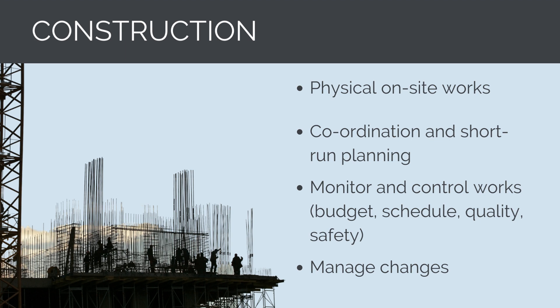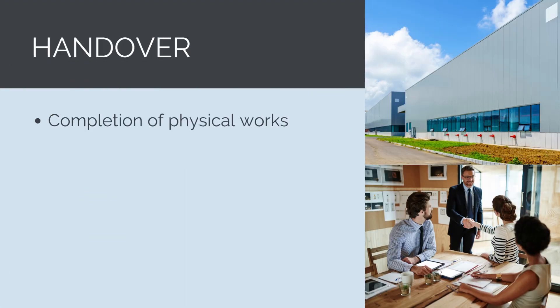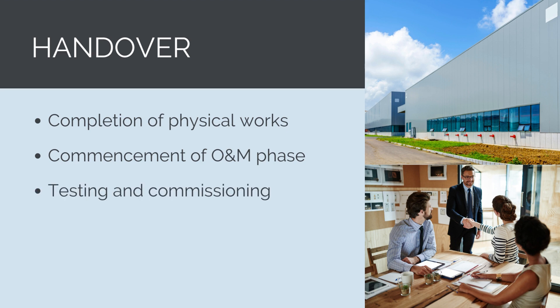Once physical works are completed and the building or asset has been constructed as per the issue-for-construction drawing set, the process of handing over the finished product back to the owner can begin. This leads to the commencement of the operations and maintenance phase. Construction contracts typically require the contractor to support the project owner in this transition — they'll need to complete a testing and commissioning process to ensure the infrastructure functions as intended, collate all the as-built drawings, and provide owner training. With the completion of this phase, the contractor has fulfilled their contractual obligations, unless they are procured under a design, construction, and maintain model or public-private partnership where they are responsible for maintenance.